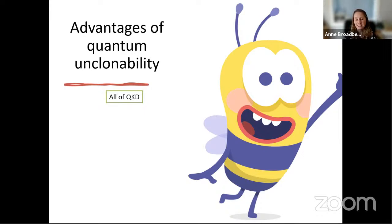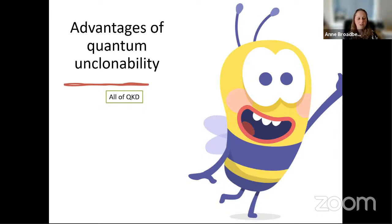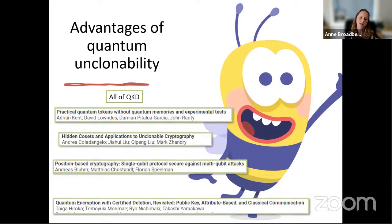Interestingly, there's this no-cloning theorem, but we never actually use that theorem to prove security of protocols. It's an intuition — if no-cloning were false, the protocols would probably not be secure — but for full proofs we have much more sophisticated techniques. There are also other talks at QCrypt beyond QKD that still have this unclonability flavor: practical quantum tokens, hidden cosets and applications to unclonable cryptography, position-based cryptography, and quantum encryption with certified deletion.